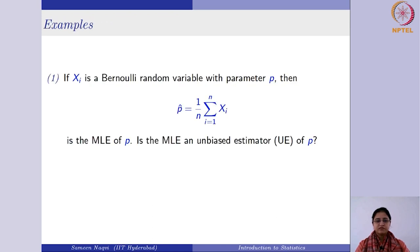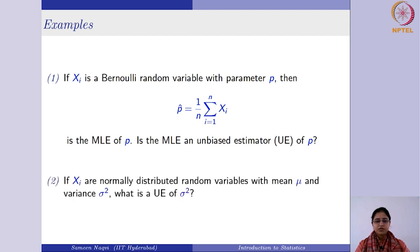To understand this, let us consider different examples. The first example: if you have a Bernoulli random variable with parameter p, then p̂ which is (1/n)∑xᵢ is the MLE of this parameter — we have seen this previously. We need to check whether this MLE is an unbiased estimator of p or not. The second question is: if xᵢ's are normally distributed with mean μ and variance σ², what is the unbiased estimator for σ²? Let us answer these two first.